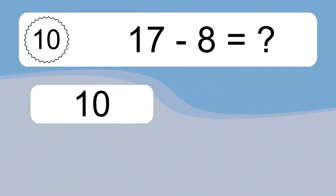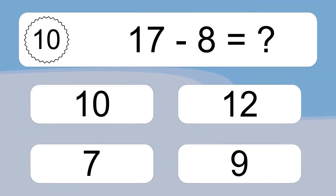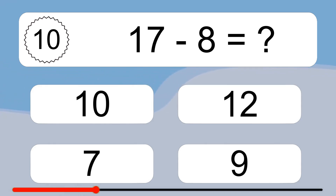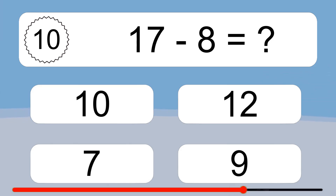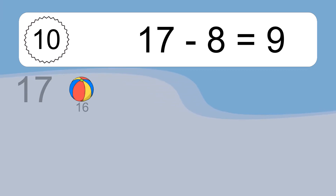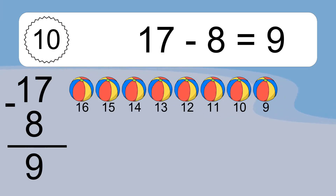17 minus 8 equals what? 17 minus 8 equals 9. Let's count it.